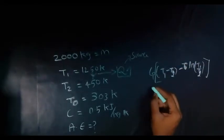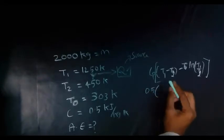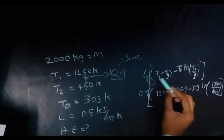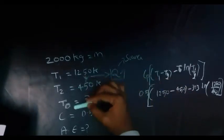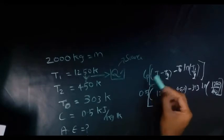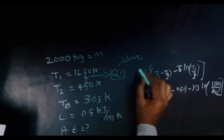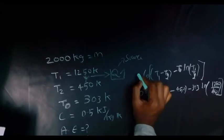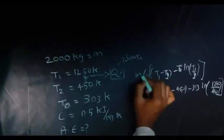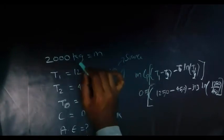Just substitute the value as it is. Everything is known—T1, T2, T0 is known, CP is also known. CP is common. If they have given mass, we have to consider the mass also. I just left it; we have to consider the mass also.